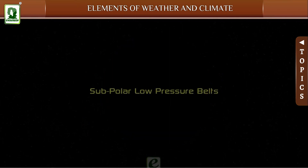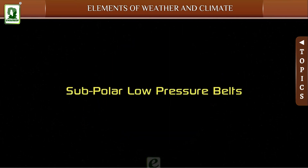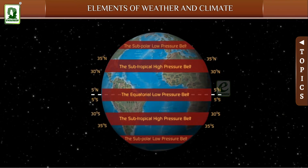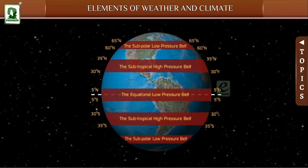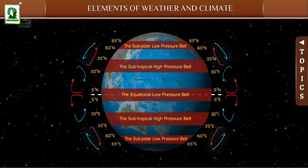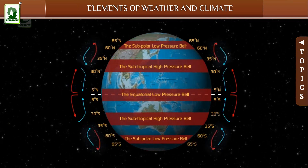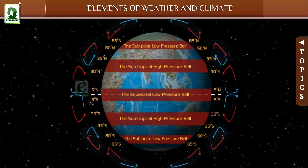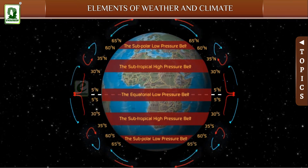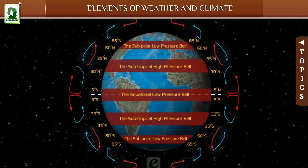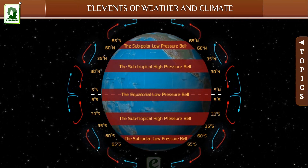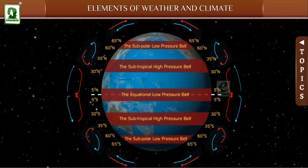The subpolar low pressure belts are located between 60 and 65 degrees in each hemisphere. In this zone, the warm winds blowing from the tropical region meet the extremely cold winds from the polar region. This creates a low pressure belt, and this region is marked by violent storms in winter.